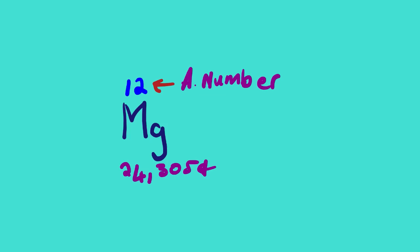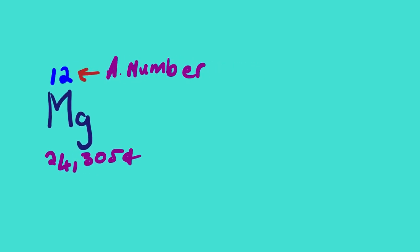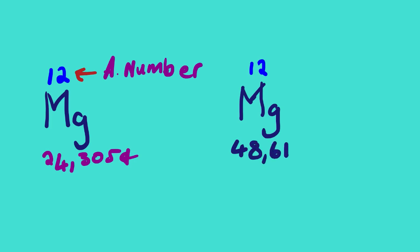Before we move to neutrons, you should know that in chemistry we have elements called isotopes. Isotopes are elements which are the same but have a different mass number. You can see the elements are the same but the atomic masses, or mass numbers, are different.